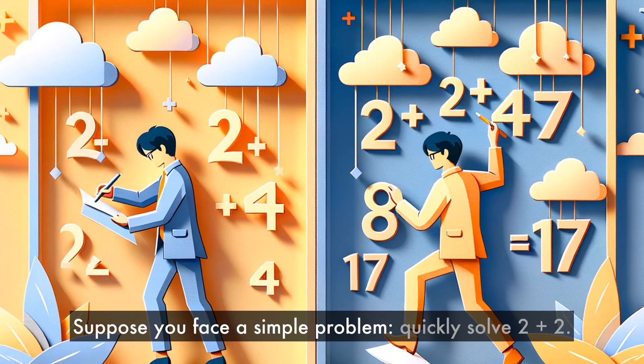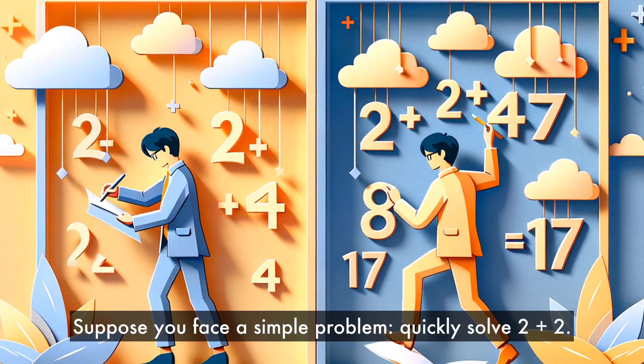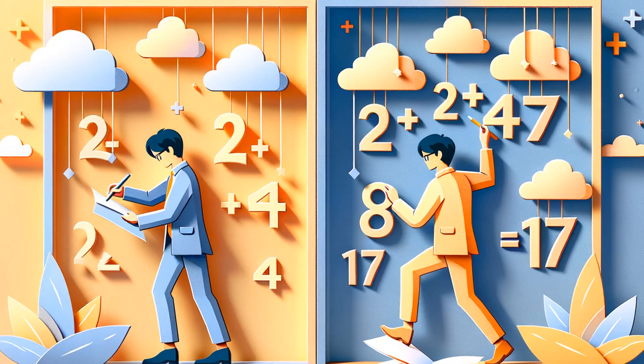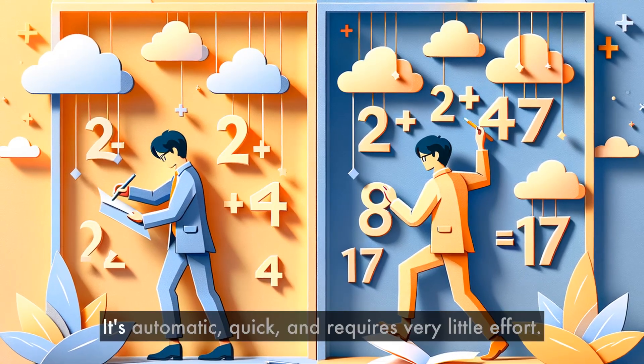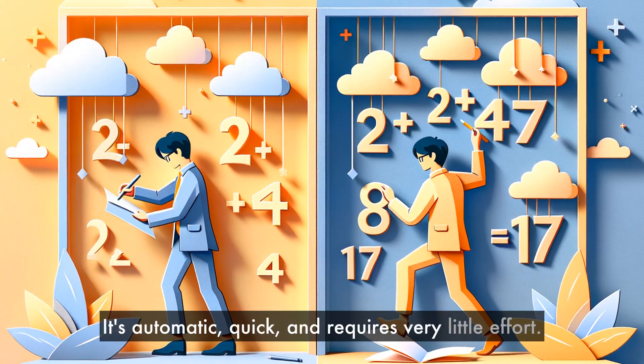Suppose you face a simple problem. Quickly solve 2 plus 2. That was easy, right? This is system 1 at work. It's automatic, quick, and requires very little effort.